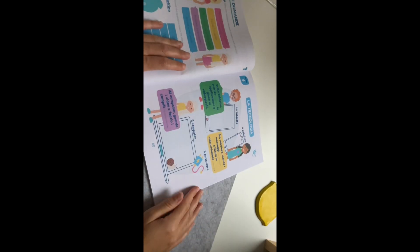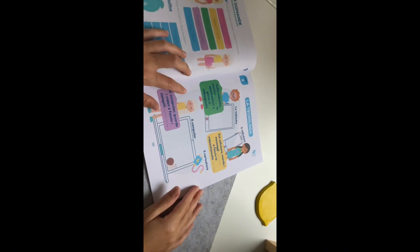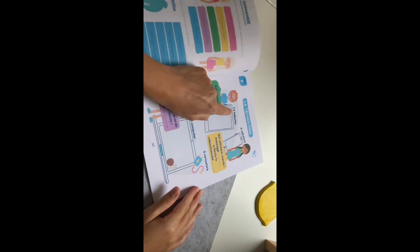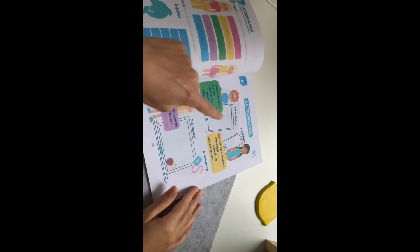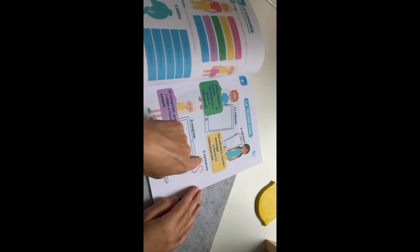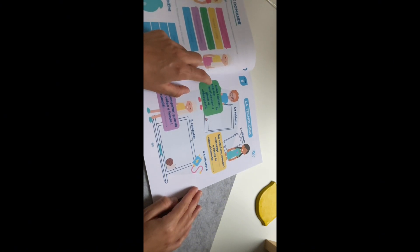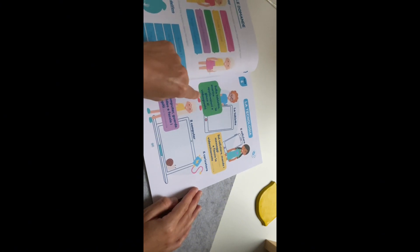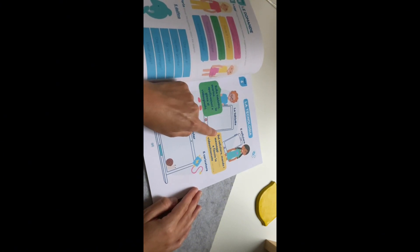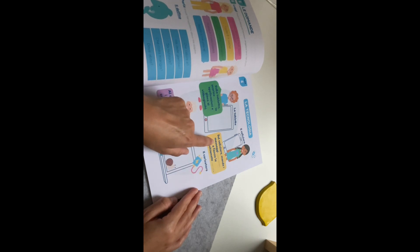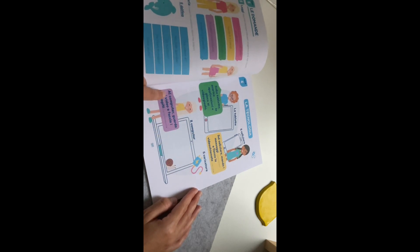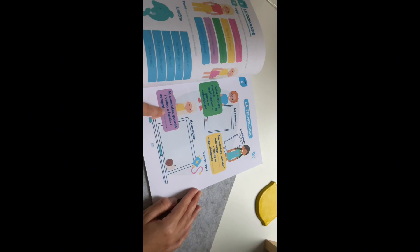Unit six. La tecnologia. La tabletta, il cellulare, il computer, il caricatore. Sulla tabletta scarico le applicazioni e gioco ai videogiochi. Sul cellulare mando i messaggi e faccio le videochiamate. Al computer guardo i video e faccio i compiti.